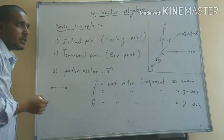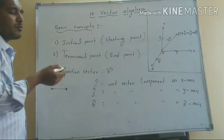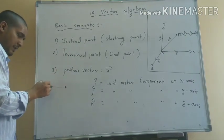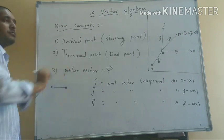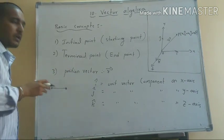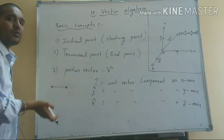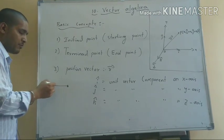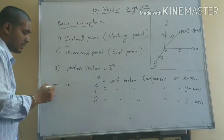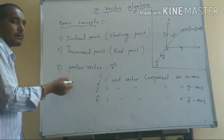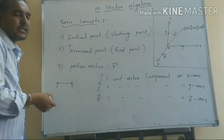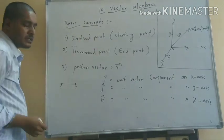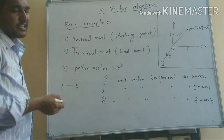A vector is a quantity which has both magnitude and direction. That is called magnitude. Direction is one direction. So, one direction is the starting point, and the terminal point is the ending point. Starting point and terminal point — or initial point. If you get it vectorially, the direction is defined from initial point to terminal point.